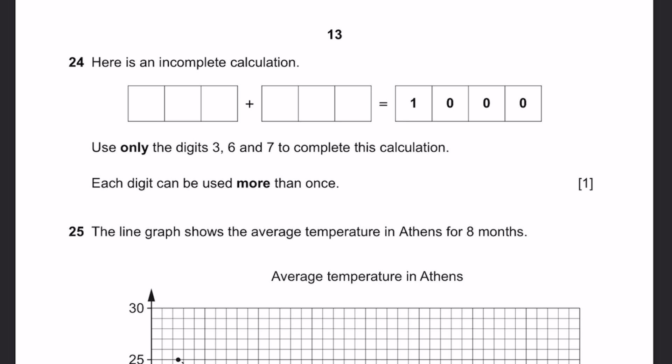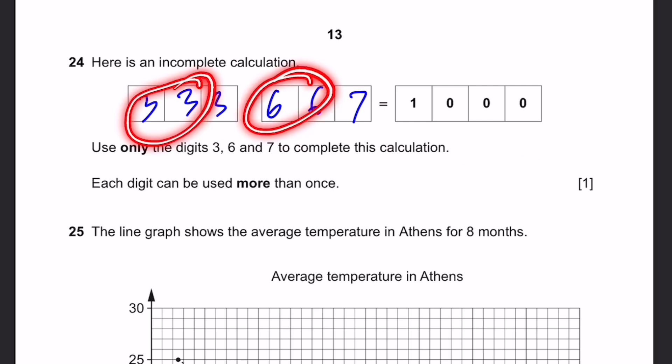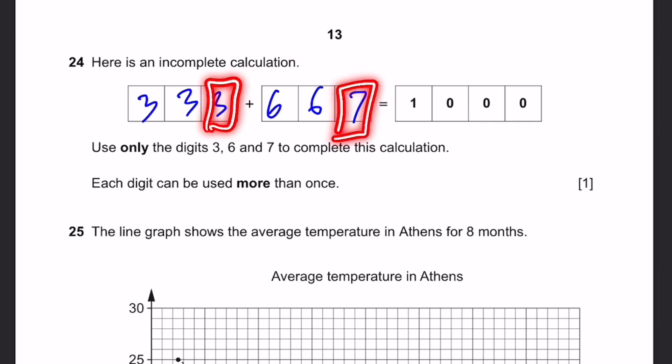Question 24. Here's an incomplete calculation. Use only the digits 3, 6, and 7 to complete the calculation. Each digit can be used more than once. So which of these add up to a multiple of 10? That means ends in 0. 3 and 7, right? So 3 and 7, we add them up. This becomes 10. One carry over. Now which one becomes 9? 3 and 6. And then one carry over again because 10. And then 3 and 6 again. So this actually does make 1000. So that's the answer. You can actually swap the positions of these 3s and 6s. Only this one should be the same. And the other two, the 3 and 6 can be anywhere. But this should be 3 plus 6. This should be 3 plus 6. That's it.